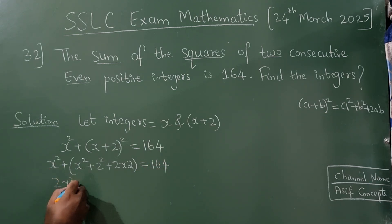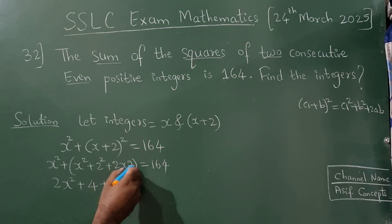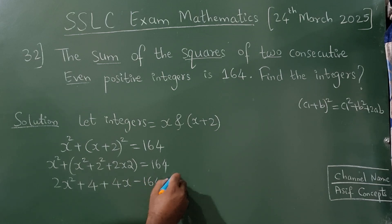Now x square plus x square is 2x square, 2 square is 4, or 2 into 2 is 4x. Now take this on the left hand side, it will become minus is equal to 0. Now this will be 2x square plus 4x minus, subtract these two, it will be 160 is equal to 0.